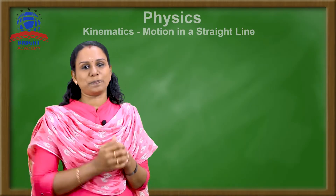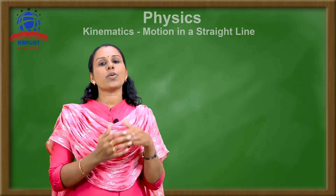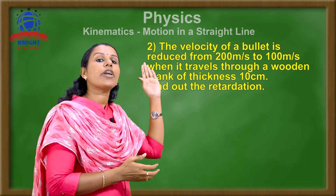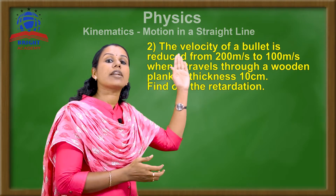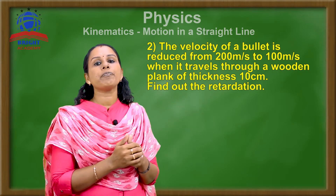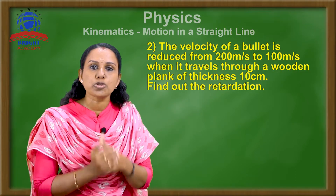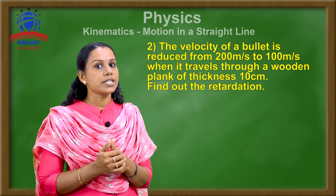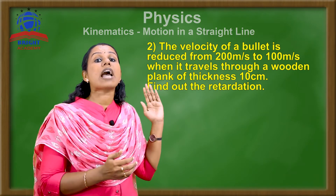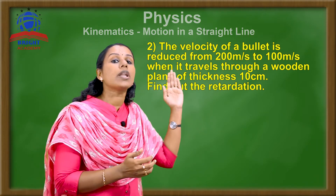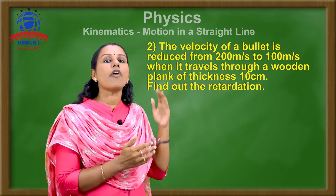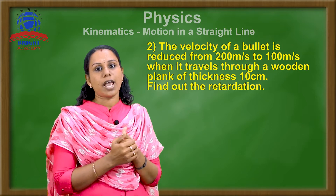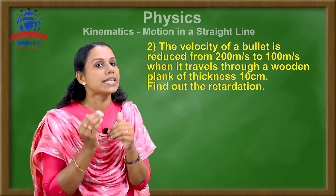Next, question number 2. The velocity of a bullet is reduced from 200 meter per second to 100 meter per second when it travels through a wooden plank of thickness 10 centimeter. Find out the retardation.